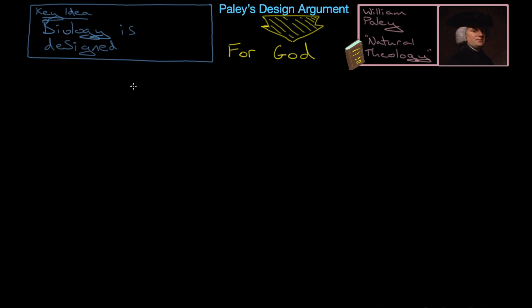Because Aquinas saw teleology everywhere. He saw purpose in everything. Whereas William Paley, in his book Natural Theology, thinks that there's no particular reason to think that the universe is designed based upon the existence of the universe, but rather that biological things have this kind of indication of design.